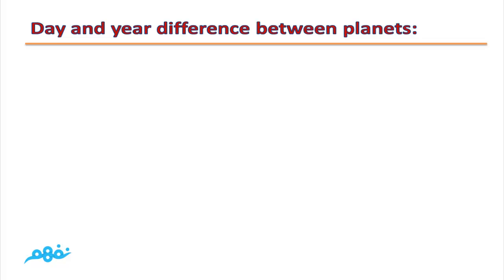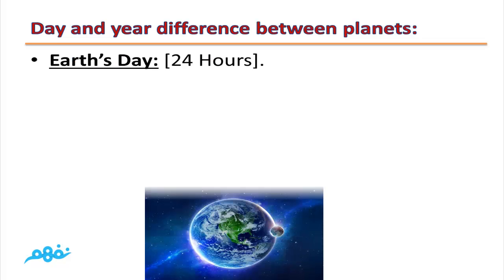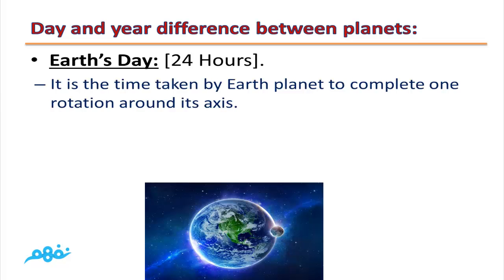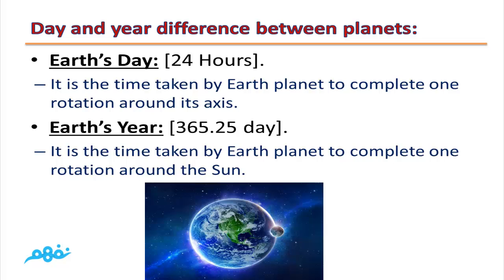Day and year difference between planets. Earth's day: 24 hours. It is the time taken by Earth planet to complete one rotation around its axis. Earth's year: 365.25 days. It is the time taken by Earth planet to complete one rotation around the sun.